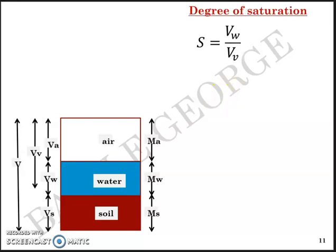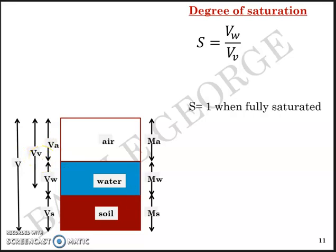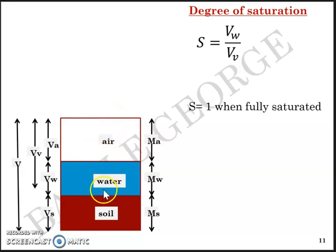The next term is degree of saturation. Degree of saturation S equals volume of water divided by volume of voids (Vw/Vv). S equals 1 when water completely occupies the volume of voids — that is, when Vw equals Vv — meaning the soil is fully saturated and there is no air content.